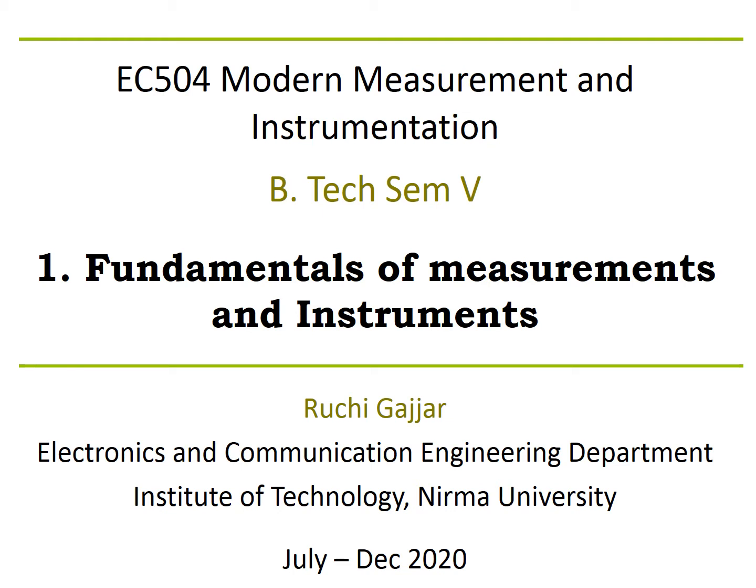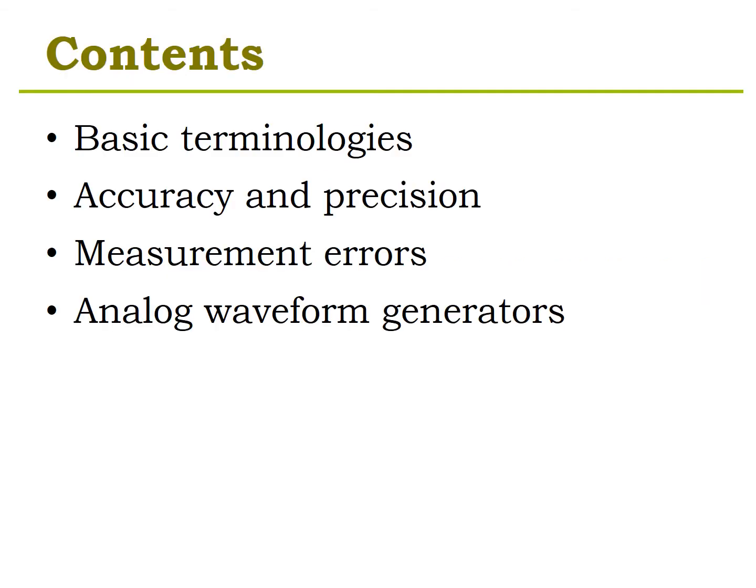Beginning with the very first chapter, the contents we are going to cover include basic terminologies, the difference between accuracy and precision, measurement errors — which are very important to identify so that we can rectify them — and finally analog waveform generators.